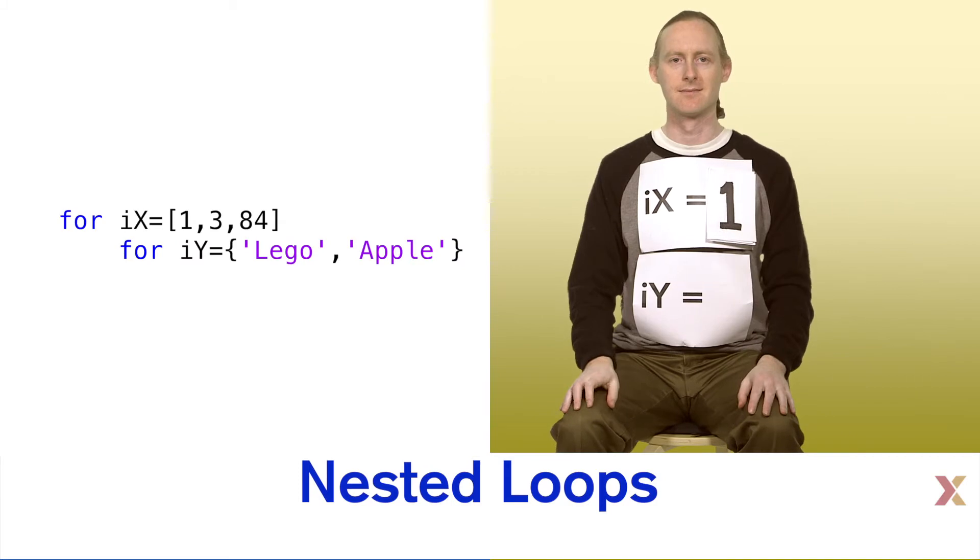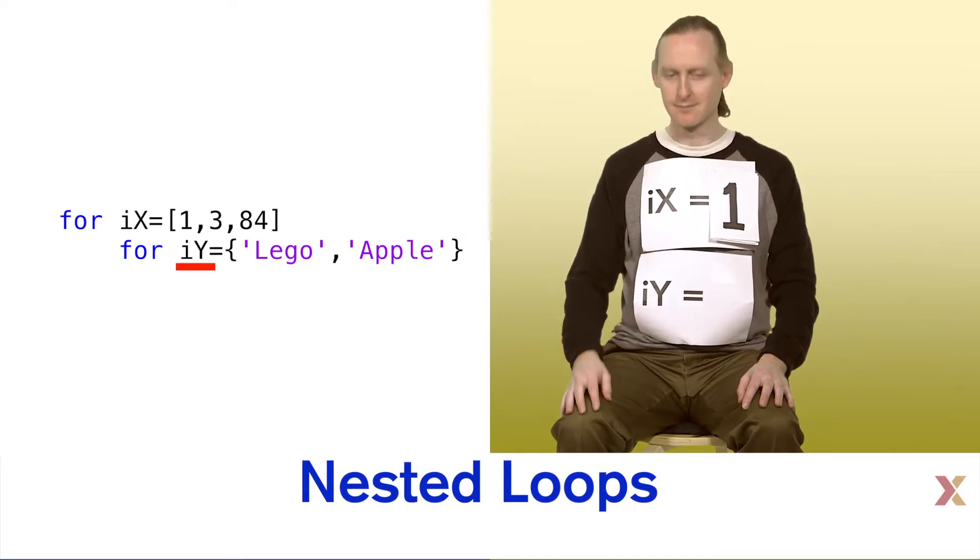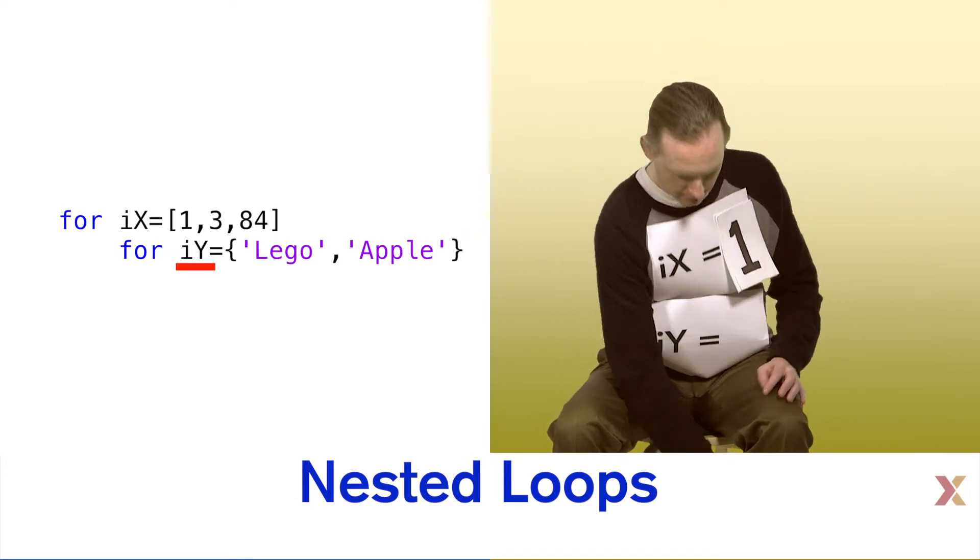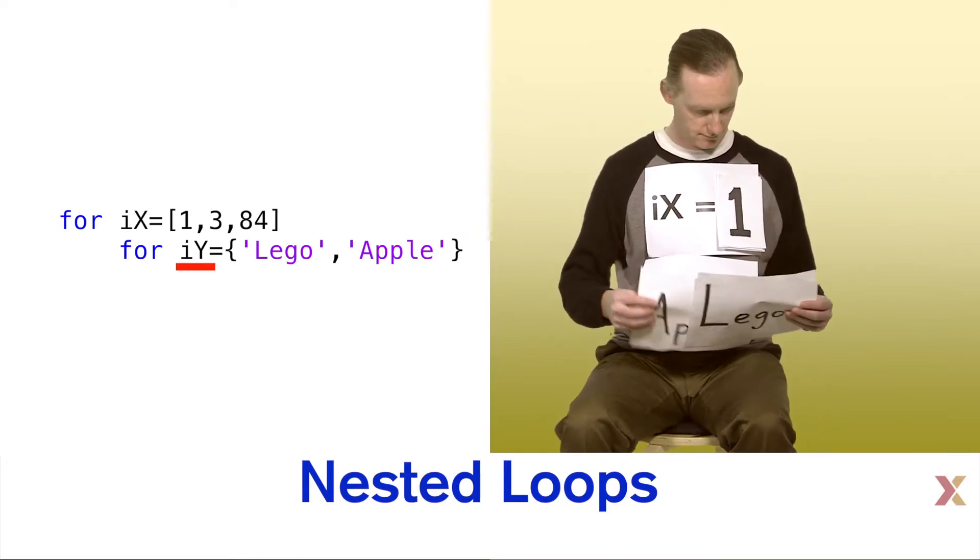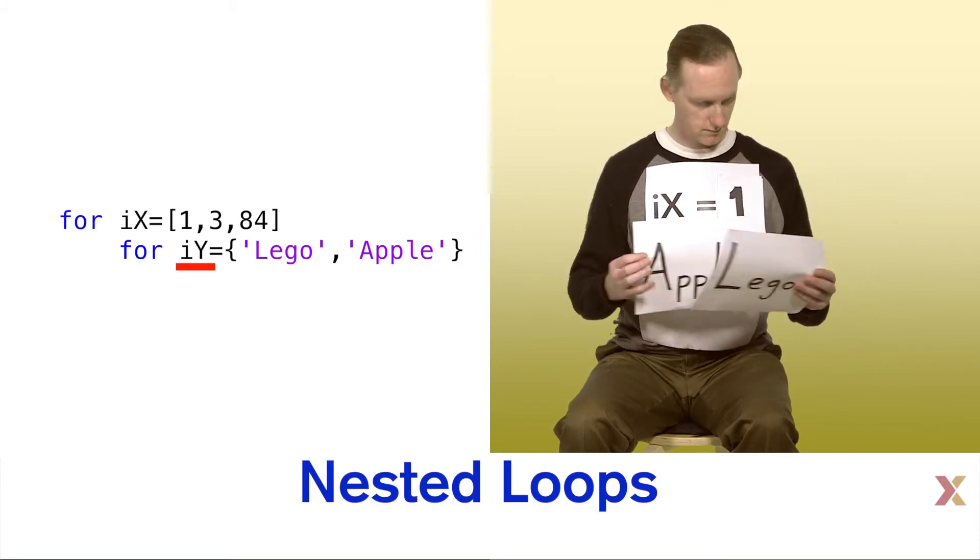When we hit the second for statement, we define a second loop variable. In this case, the variable is iy. iy will be set equal to the first value of the array in this loop's declaration. In this case, the array is an array of cells. iy is therefore a cell.